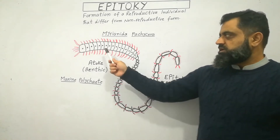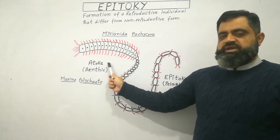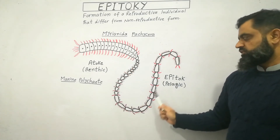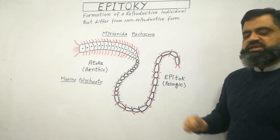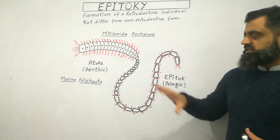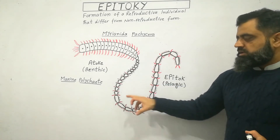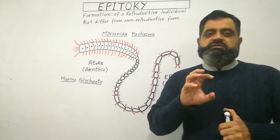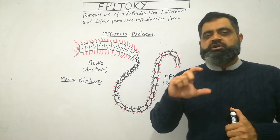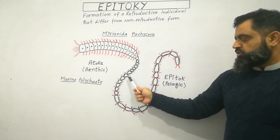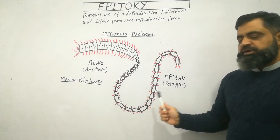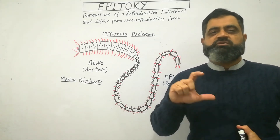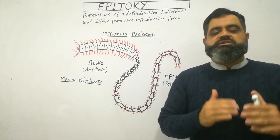Mostly the anterior segments of the body are known as the atoke, and the posterior segments, which are reproductive, are known as the epitoke. The epitoke has specialized parapodia — appendages used for locomotion — but in the epitoke they are specialized for better locomotion and swimming in water.